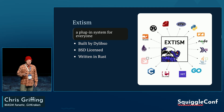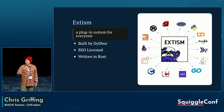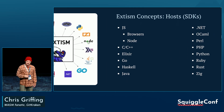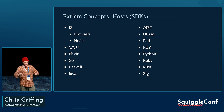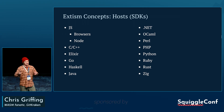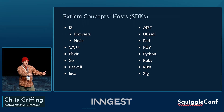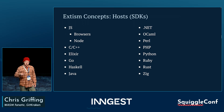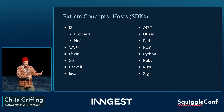Today I'm talking about Extism specifically. It's a plugin system for everyone, built by Dylibso, BSD-licensed, and written in Rust. Your host — which is your application — brings in SDKs, and it supports a lot of languages, so your applications can bring in plugins from a whole bunch of different languages as well.